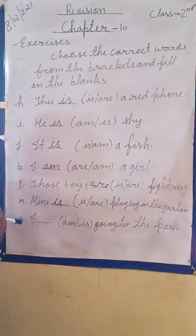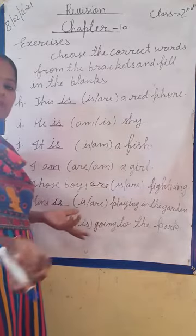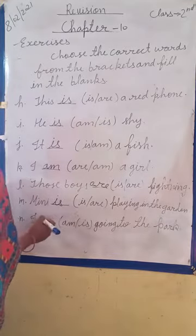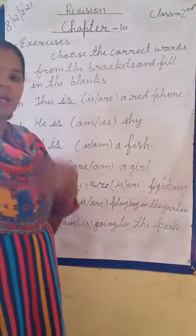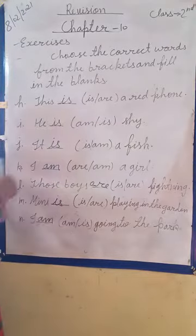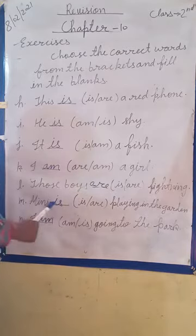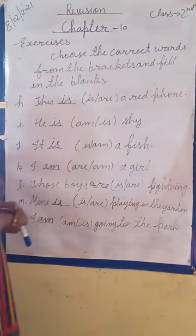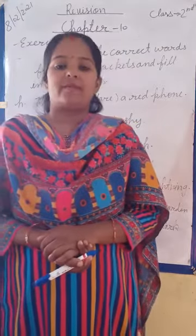Next and last, number N: 'I' phir aagaya aapke sentence mein. 'I' ke saath kya use karna hai? 'Am'. Our sentence is: I am going to the park. Main park mein ja raha hoon. Is tarah se is, am, are — correct word jo tha humne fill kiya. Now I hope that you understood it very well. Thanks and have a nice day.